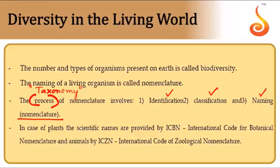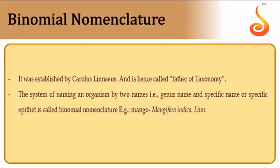The process of naming is referred to as nomenclature, done by scientific bodies like ICBN for plants and ICZN for animals. Binomial nomenclature was established by the father of taxonomy, Carolus Linnaeus, who gave two names — the genus name and the specific name — which is why it is called binomial nomenclature. The name of the author who first described the organism is also affixed to the scientific name.